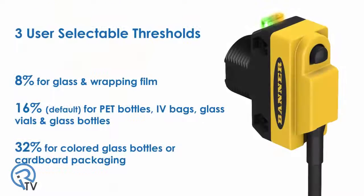The three user selectable thresholds allow users to optimize the sensor's performance to detect small changes in the amount of light received.